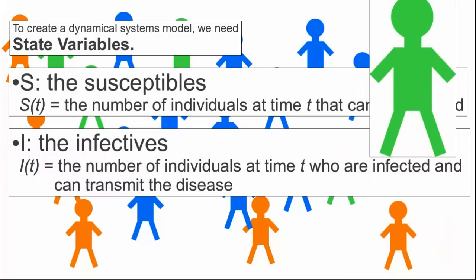The second state variable is I, or the infectives. We let I of t be the number of individuals at time t who are infected and can transmit the disease, i.e., the green guys.